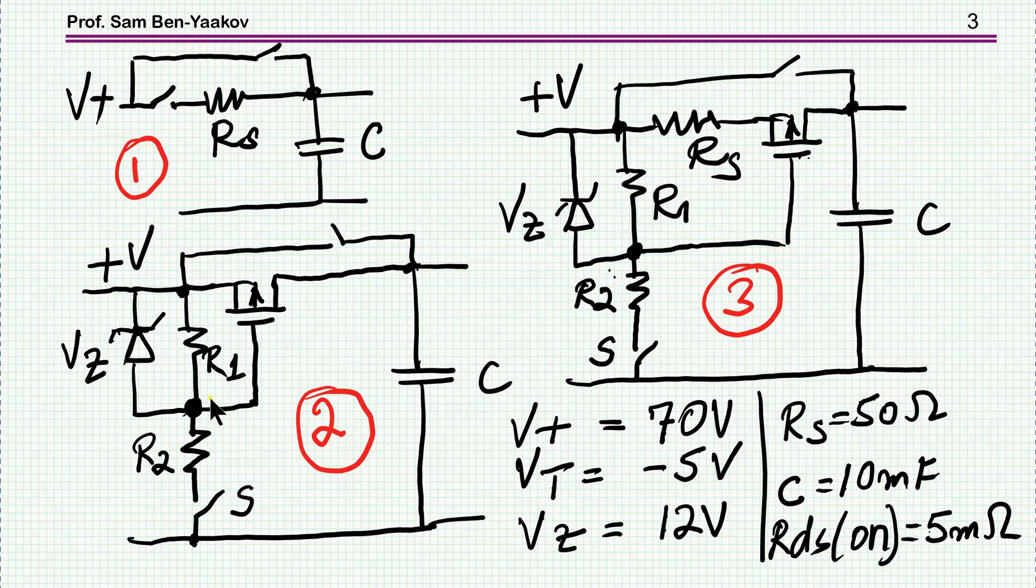Here, number two, we have a transistor. The Zener keeps the voltage here at 12 volts, the threshold is only 5, so the transistor is conducting, and then you have charging through this path. Once the capacitor is charged, you turn on the main switch.